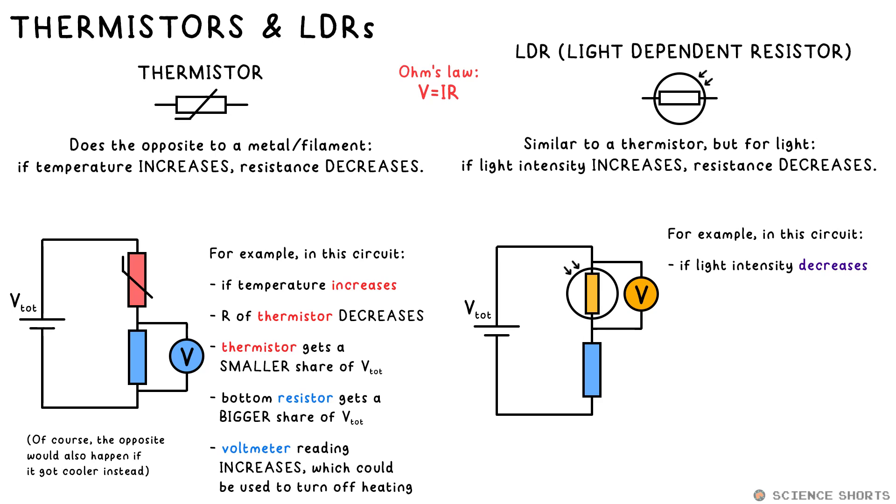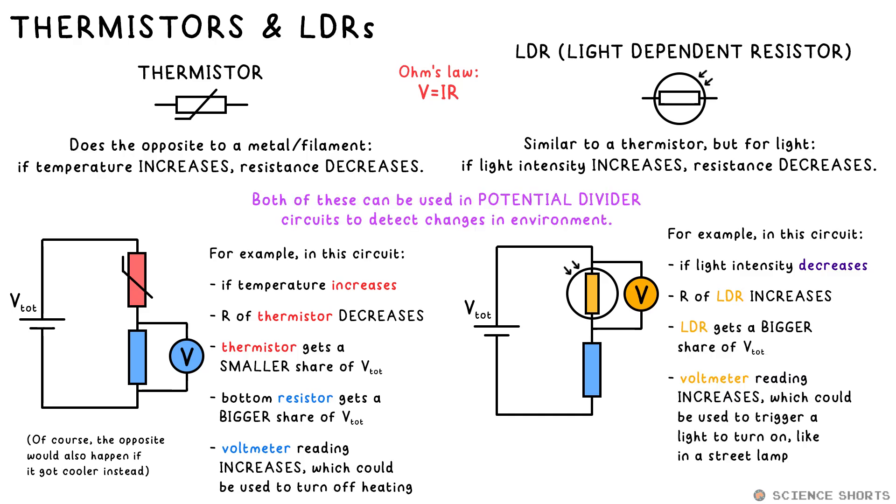An LDR is a light dependent resistor, very similar to a thermistor, but resistance goes down with increased light intensity this time, not temperature. So this circuit could be what's in the sensor on the top of a street lamp for example. Light intensity goes down at night, resistance of the LDR goes up, as does its share of the PD. This then could be used to trigger the street lamp to turn on.